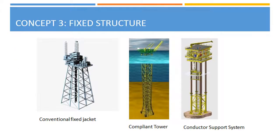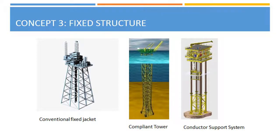Fixed structure concept. Our third proposal is to construct a new jacket. We looked at the types commonly used in the industry: the conventional fixed jacket, the compliant tower, and the conductor support system. By comparing the pros and cons of these, we came up with a satellite triangular jacket, which is suitable for our intermediate water depth of 136 meters. The new jacket will be 160 meters high to match the level of the Albion platform. Bracings will be provided to resist fluid loadings. A double-decker truss bridge will connect both jackets to allow pipeline connections and personnel access for maintenance, with dimensions as shown on this slide.